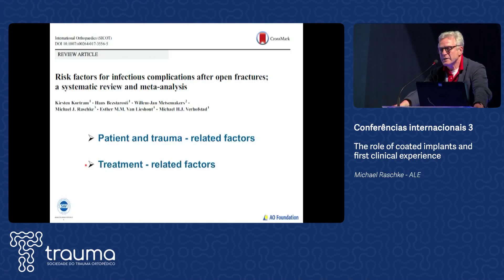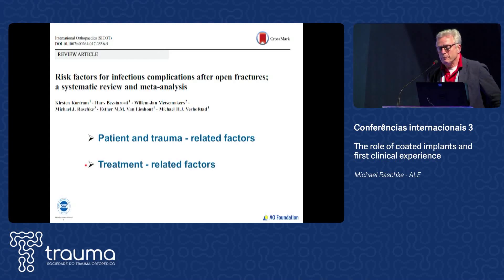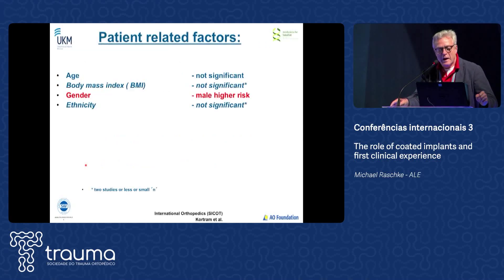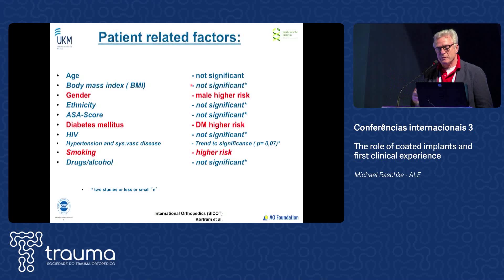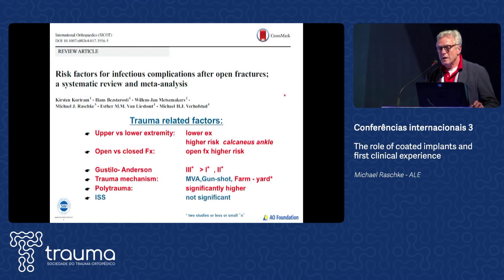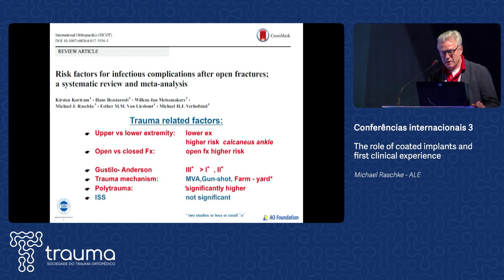Within the anti-infective task force of the AO Foundation we looked at the risk factors to define infections. We did a meta-analysis and looked at age and patient factors, trauma factors, and treatment-related factors. Interestingly, patient-related factors: it's gender - male is at higher risk to develop infection than female - diabetes and smoking. Trauma-related factors: the lower extremity has a much higher risk of infection, open fractures have higher risk, and polytrauma has a much higher risk.